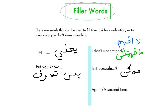Another expression is 'again' — marran thaniya. So if you want to say, 'Would you please tell me the question again?' you would say, 'mumkin ta'ulli l-su'al marran thaniya?' Or simply, you can look at the teacher or a person and just say, 'marran thaniya?'